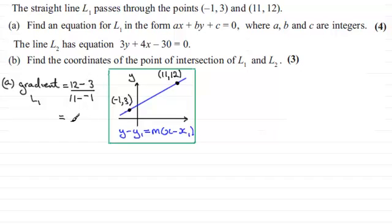You could have done 3 minus 12 divided by -1 minus 11. You'll get exactly the same answer. And that answer will be 12 take away 3, which is 9. And 11 minus (-1) is 12. And 9 twelfths reduces down to 3 quarters. So the gradient then of that line is going to be 3 quarters.